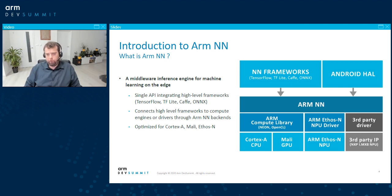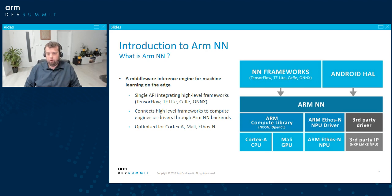An example of a compute engine used in ArmNN is the ARM Compute Library, which accelerates the models either through NEON for Cortex-A processors or through OpenCL for Mali GPUs. It can also accelerate your neural network using the Ethos NPU.